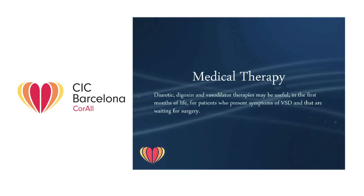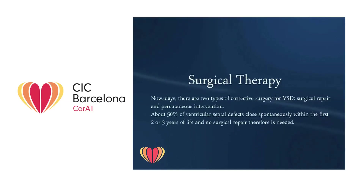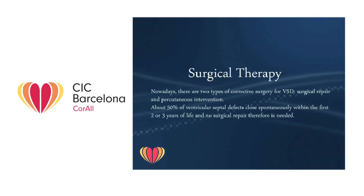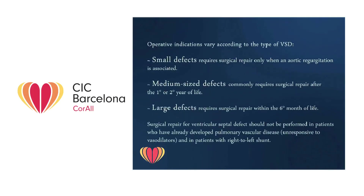Diuretic, digoxin, and vasodilator therapies may be useful in the first months of life for patients who present symptoms of ventricular septal defect and are waiting for surgery. Nowadays there are two types of corrective surgery: surgical repair and percutaneous intervention. About 50% of ventricular septal defects close spontaneously within the first two or three years of life, and no surgical repair is needed. Small defects require surgical repair only when aortic regurgitation is associated. Medium-sized defects commonly require surgical repair after the first or second year of life. Large defects require surgical repair within the sixth month of life.